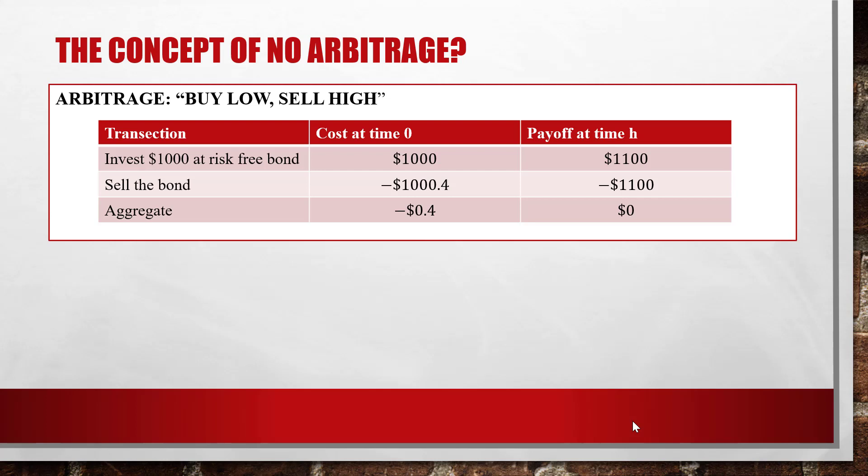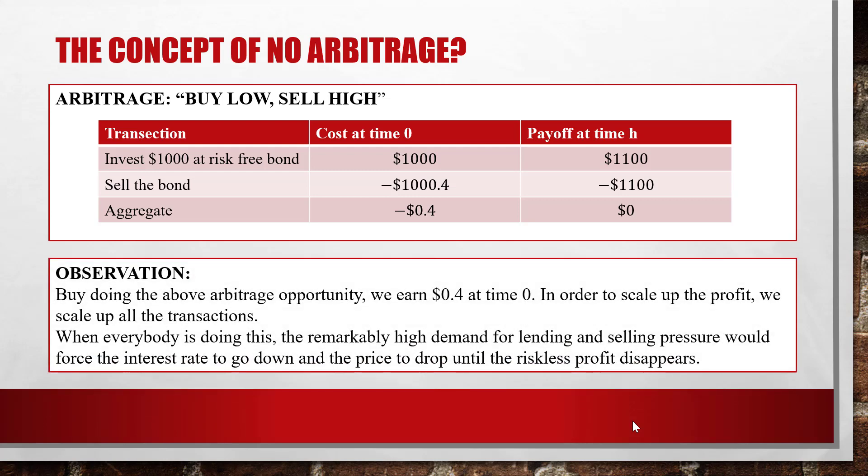At the same time, time zero, you also sell a bond. At that time the bond is priced at $1,000.04, and the payoff at time h is also $1,100. The net cash flow at time zero is negative $0.04 — wait, actually the arbitrage here at time zero is +$0.04, and at time h the two payoffs cancel out. So by doing this strategy, we earn four cents at time zero.